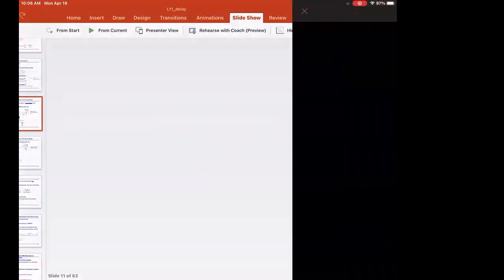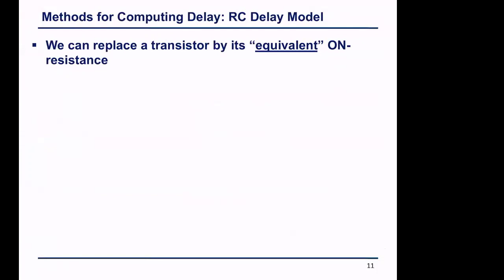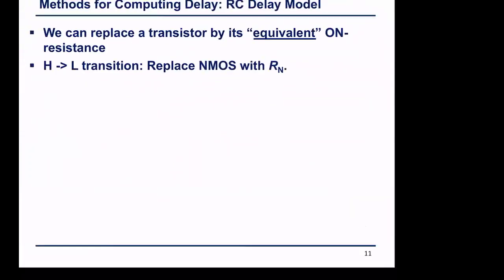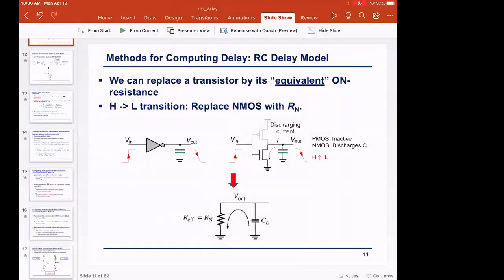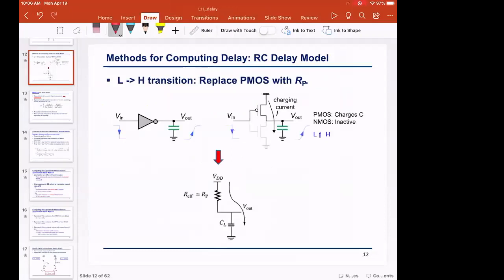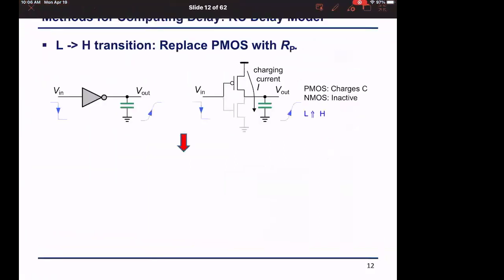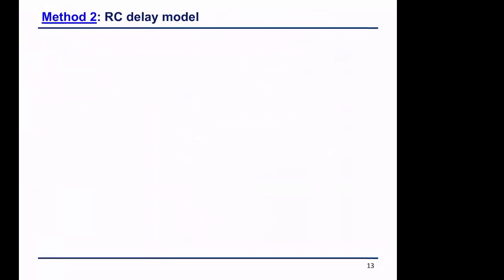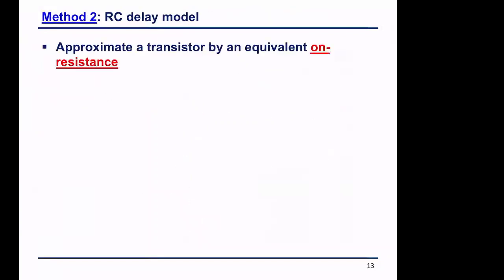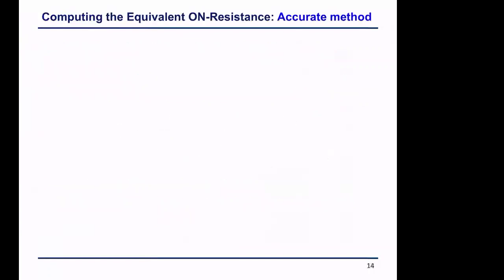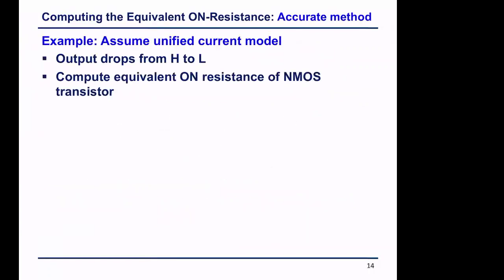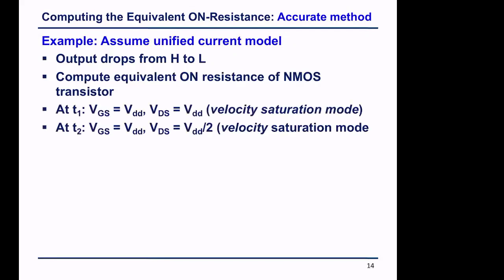We discussed the equivalent on-resistance for the device. To find the effective on-resistance, it depends which device is on. If VIN goes low to high, the NMOS is on and we need the NMOS resistor. If the input goes high to low, we need the effective resistance of the P device. We can either approximate it as the average of a complex equation or use the unified current model at two time points.